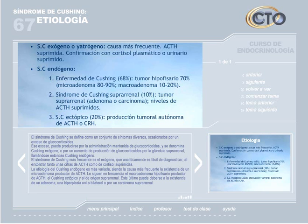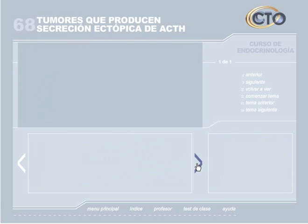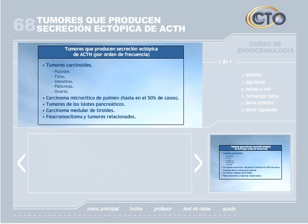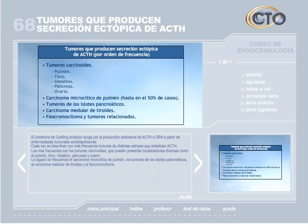El Cushing suprarrenal puede deberse a un adenoma, una hiperplasia uni o bilateral, o un carcinoma suprarrenal. El síndrome de Cushing ectópico surge por la producción autónoma de ACTH o CRH a partir de enfermedades tumorales extrahipofisarias. Lo más frecuente son los tumores carcinoides, con localizaciones diversas como pulmón, timo, intestino, páncreas u ovario. Le siguen en frecuencia el carcinoma microcítico de pulmón, los tumores de los islotes pancreáticos, el carcinoma medular de tiroides y el feocromocitoma.